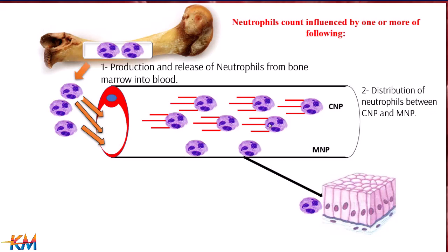Neutrophils are present in both the central and marginal neutrophilic pools, and any deviation in distribution will change the neutrophil count. If marginated neutrophils shift to the central pool, neutrophilia will occur. The third factor is the rate of migration of neutrophils from blood to tissue. If migration increases, neutrophils in the bloodstream decrease, causing neutropenia, while if migration decreases, neutrophilia results.